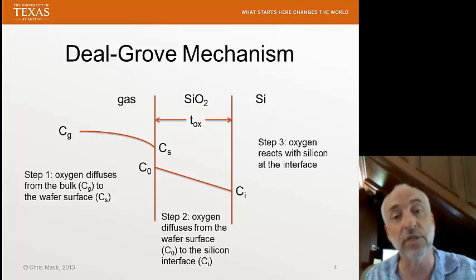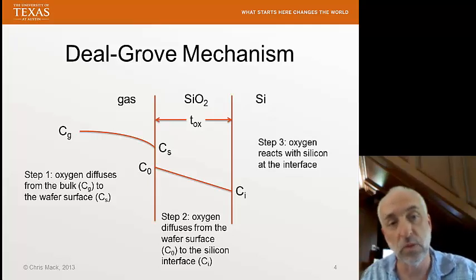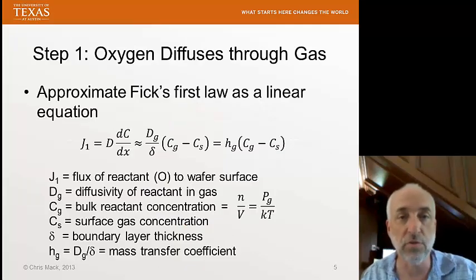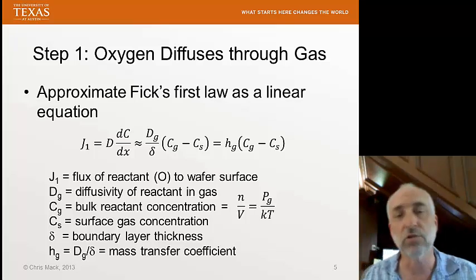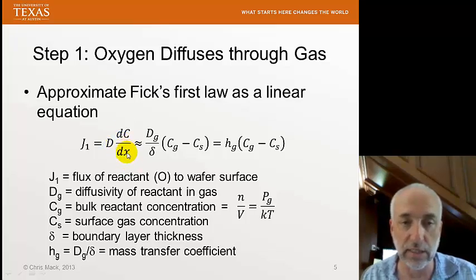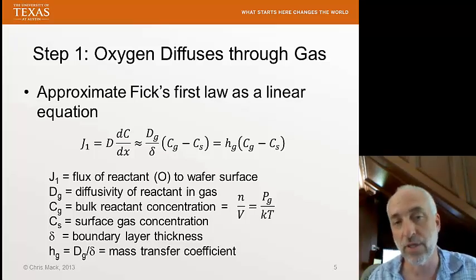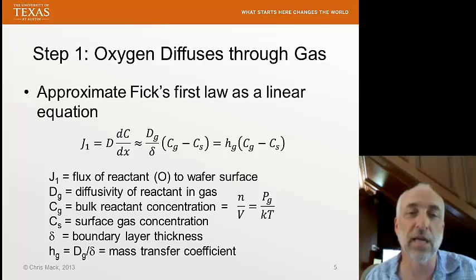We can write down equations for each of these steps and combine them to get an overall equation for oxide growth. For step 1, oxygen diffuses through the gas, governed by Fick's law. We let J-sub-1 be the flux of the reactant oxygen to the wafer surface. Fick's law gives it as the diffusivity times the concentration gradient dC/dx, where C is the concentration of oxygen.